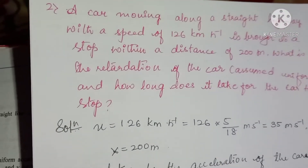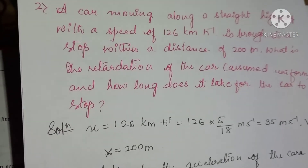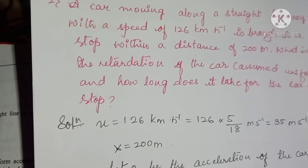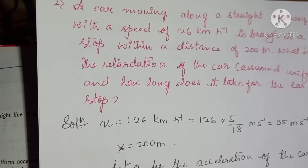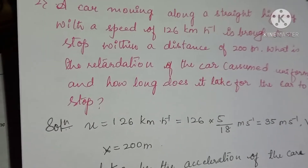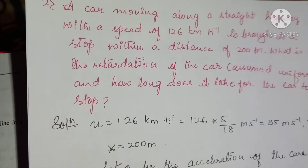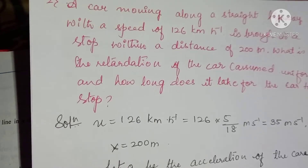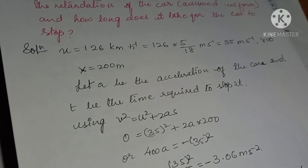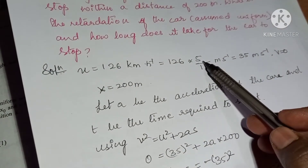A car is moving along a straight highway with a speed of 126 km per hour. It is brought to a stop within a distance of 200 meters. What is the retardation of the car assuming uniform acceleration, and how long does it take for the car to stop?